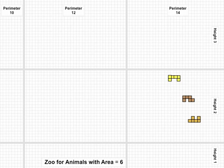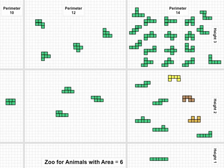I want you to get your students to find a whole bunch of other animals, all with six squares — all with area six — and put them into this zoo. They have to be in the right cages. Here are all of the animals that are possible, and the children not only must discover the animals, they must name them. For example, is this a goldfish or is it a clam? They have to come up with their own ideas for the names.